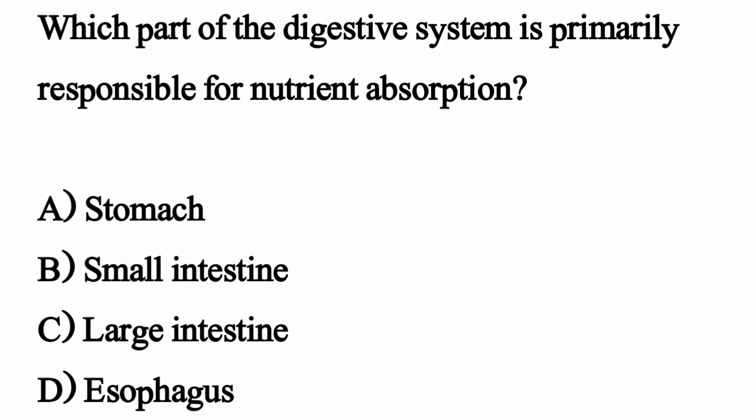Which part of the digestive system is primarily responsible for nutrient absorption? The correct option is Option B: Small intestine.